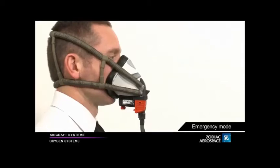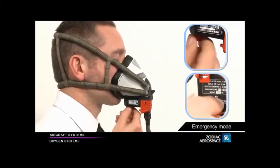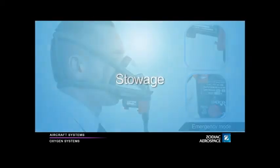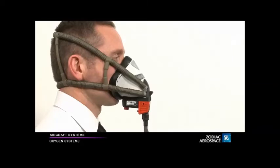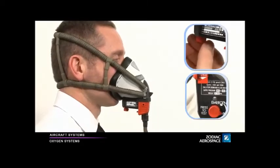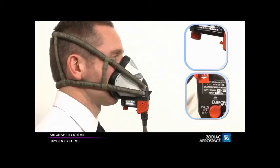To use the emergency mode, turn the press to test and emergency rotating knob counterclockwise. Make sure that the dilution rocker is pushed upwards in 100% mode. Make sure also to deactivate the emergency mode by rotating the press to test and emergency knob clockwise.